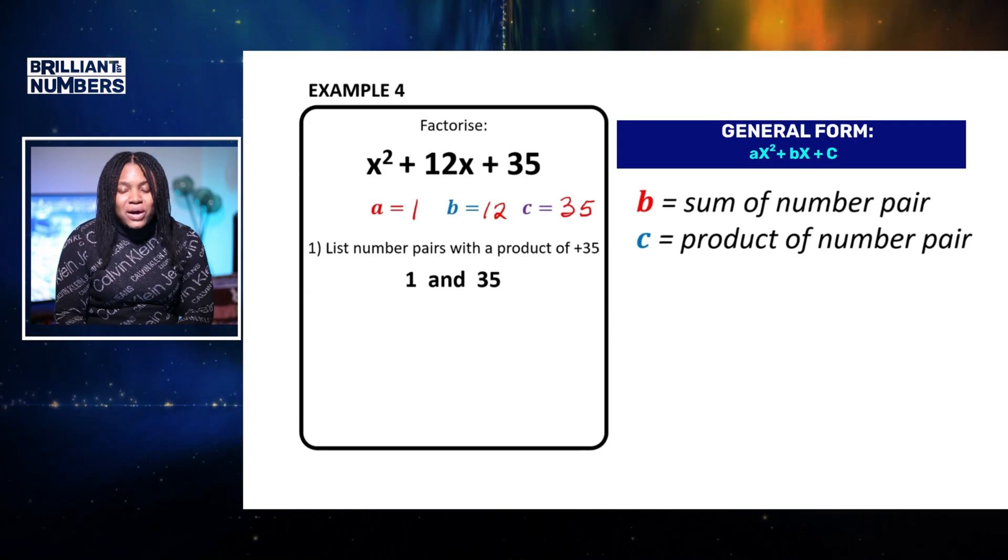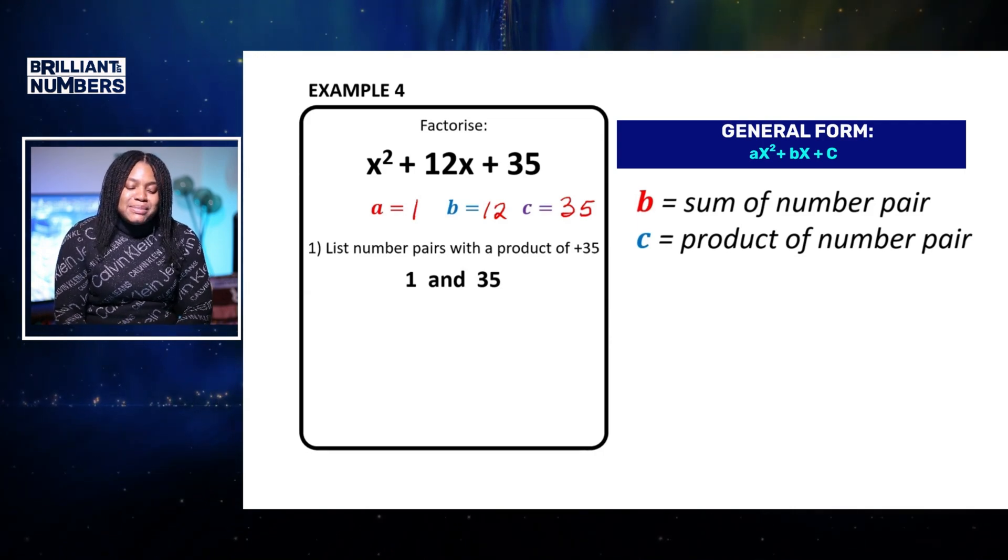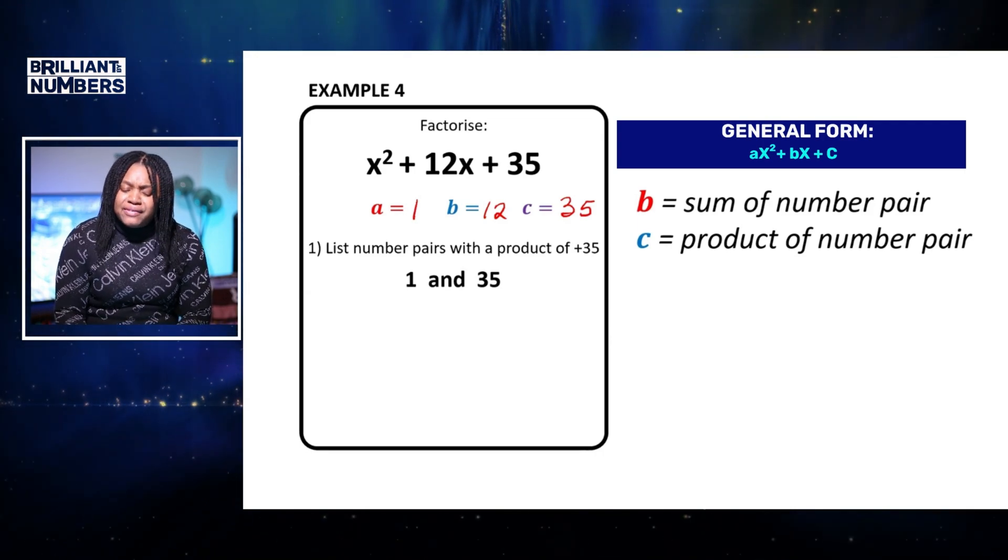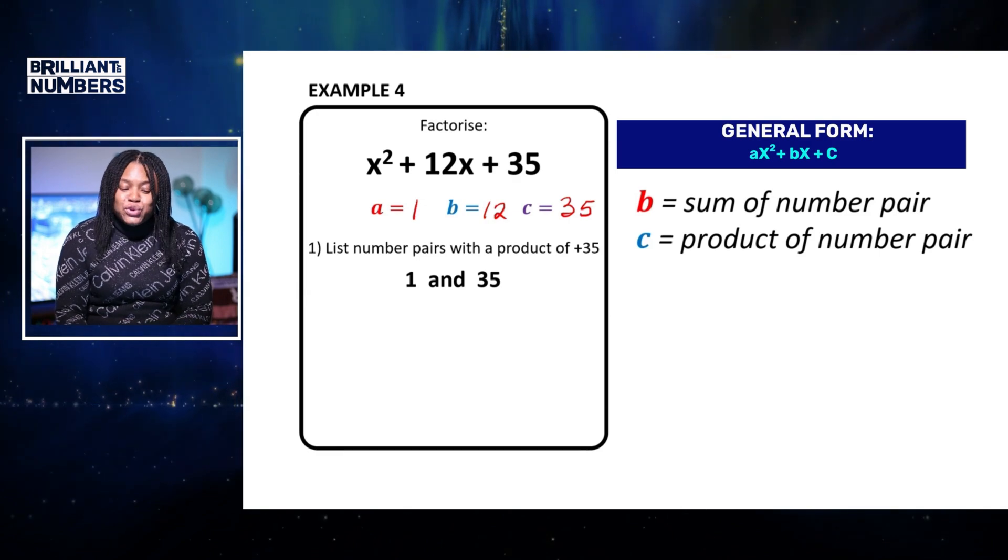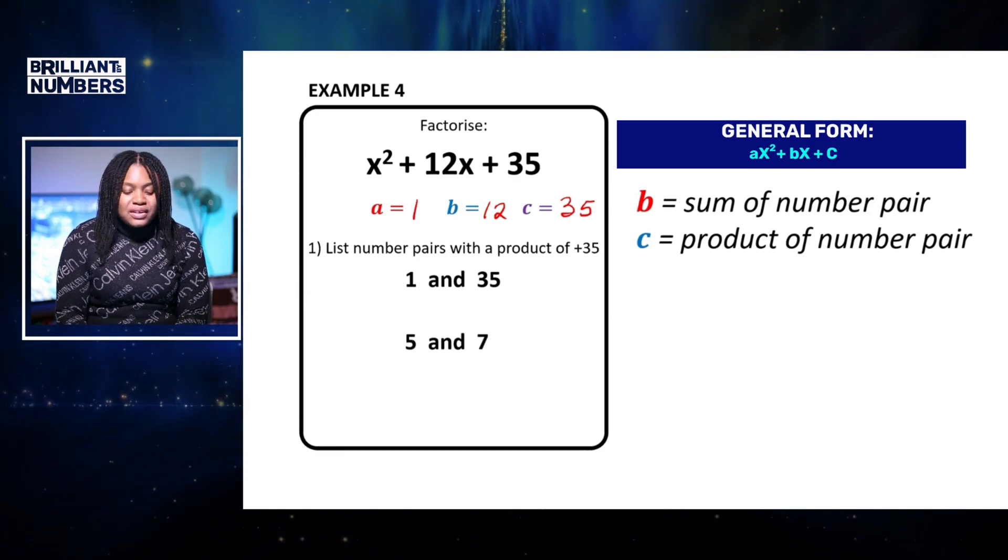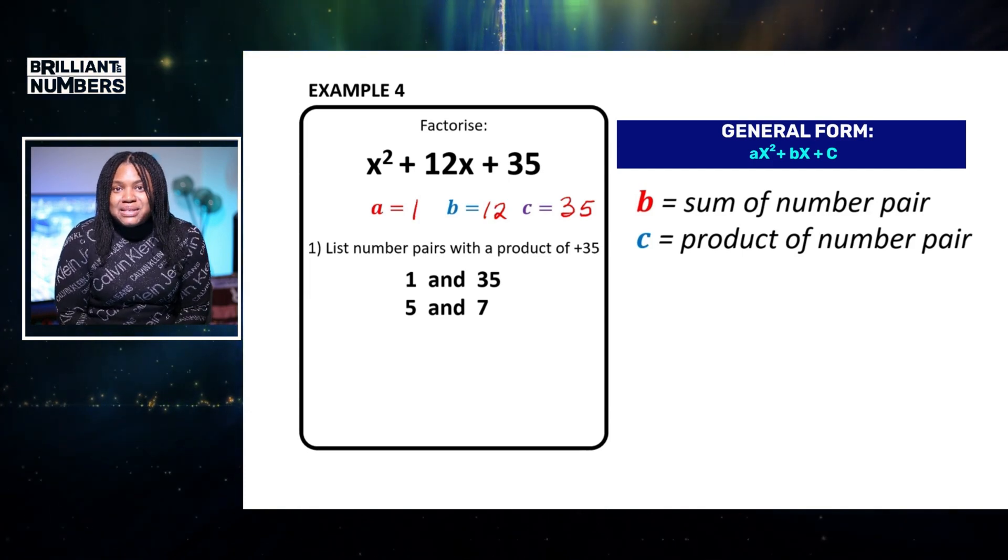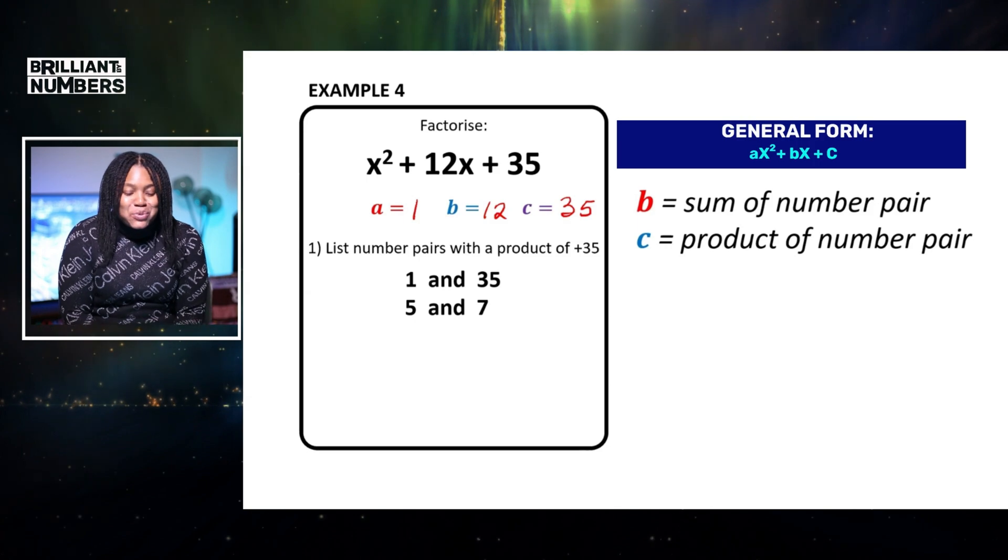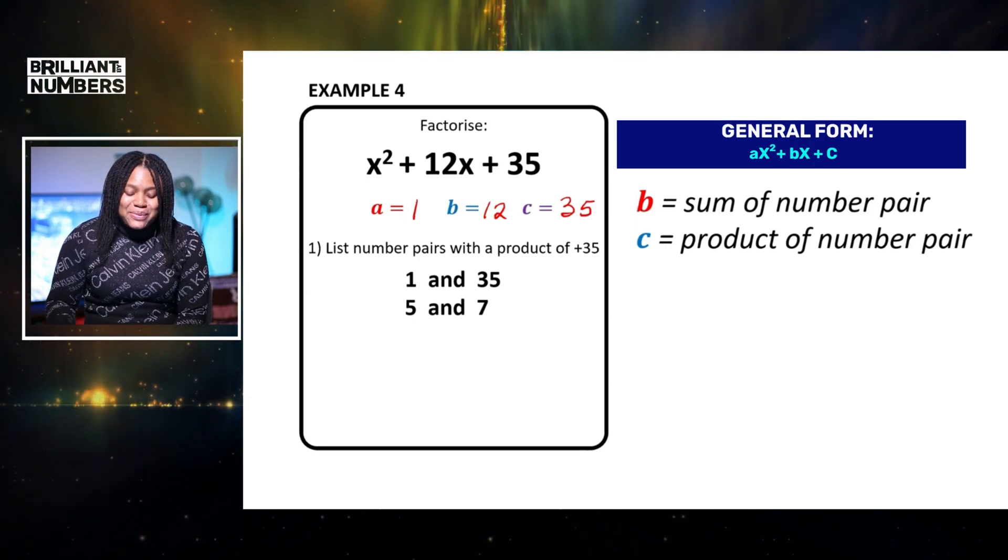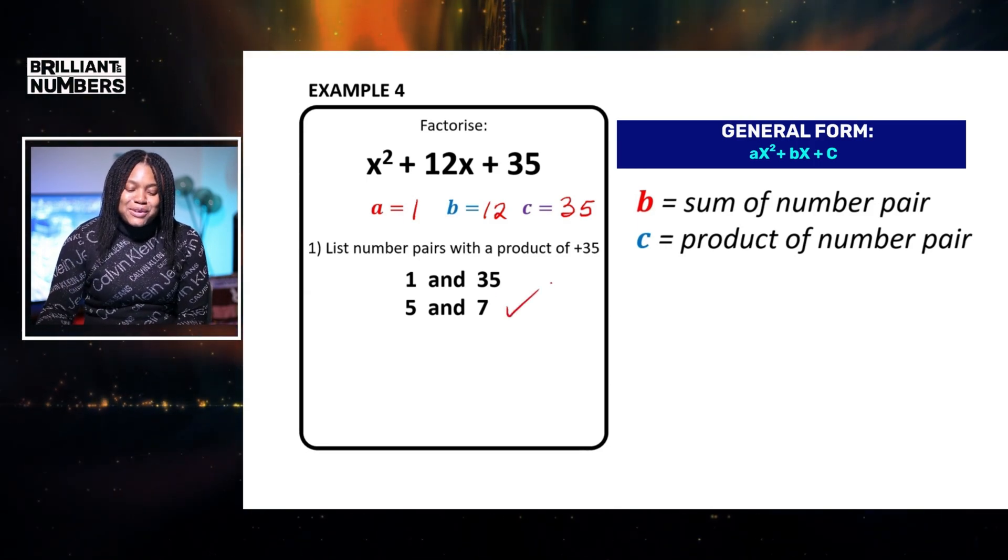So again, we've got 1 and 35. 1 times 35 gives us 35. But clearly, they do not add to 12. So our second number pair is 5 and 7. 7 times 5 is 35 and also it adds to 12. So we have found our pair.